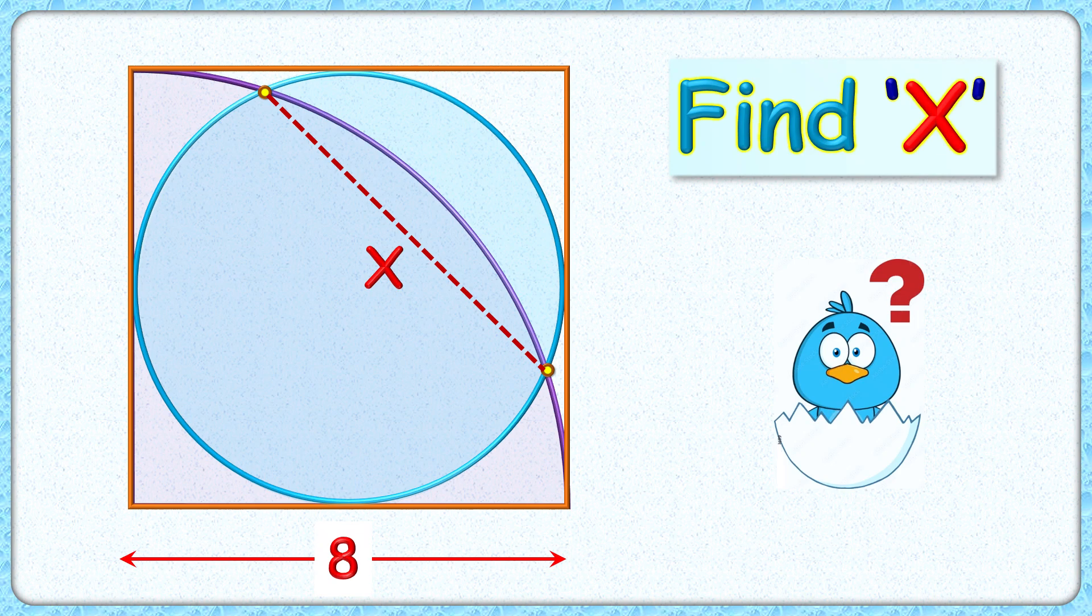Welcome everyone. This interesting question given to us is a circle and a quadrant inside a square with side length 8 cm. The exciting part is with this limited data we have to find the length of this red line segment or value of x.